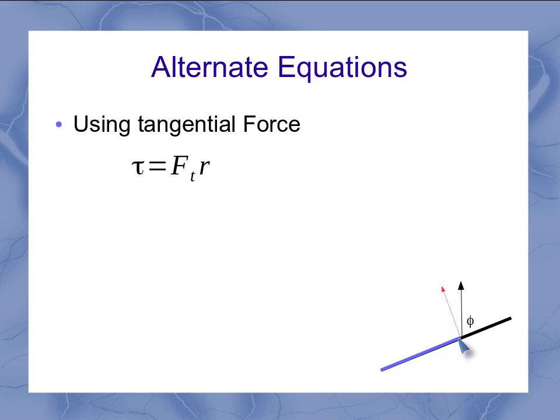And the distance from the axis that I need to use here is not necessarily the entire bar's length, but just the distance from the pivot point up to where the force is being applied. Now, this tangential force, if I were to look at my triangles, if this is my angle phi that I'm defining, then the tangential part uses the sine of phi, F_t = F sin φ.